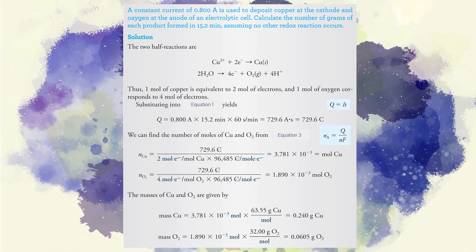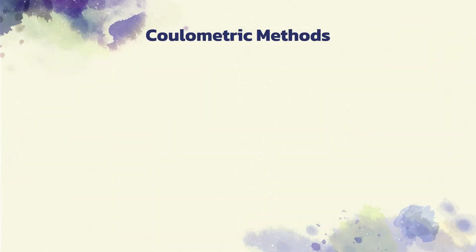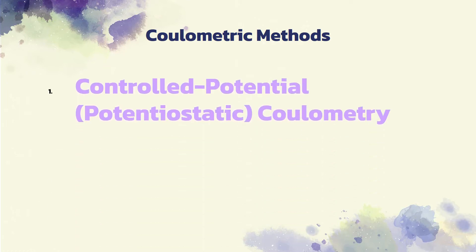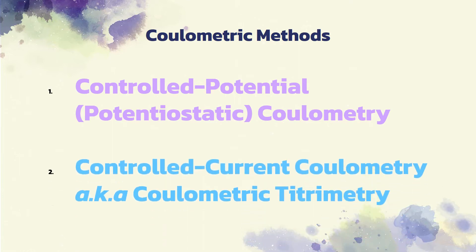Here is a sample problem for you to apply the working equations involved in coulometry. Feel free to pause this video to practice your skills. To continue, two methods have been developed that are based on measuring the quantity of charge. First, there is controlled potential, or potentiostatic coulometry. And then there is also what we call controlled current coulometry, more often called coulometric titrimetry.